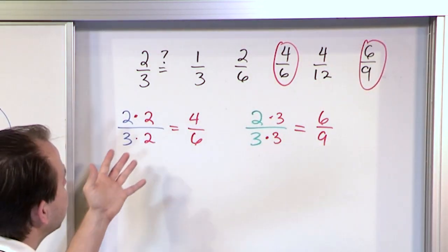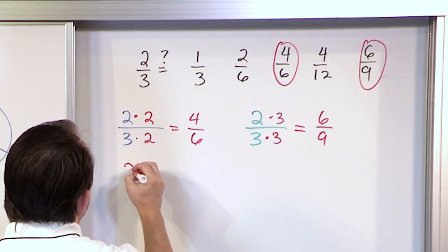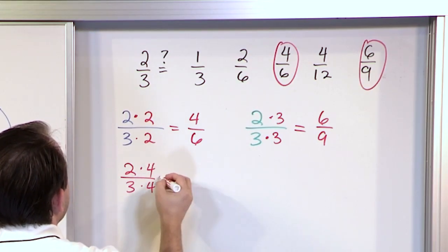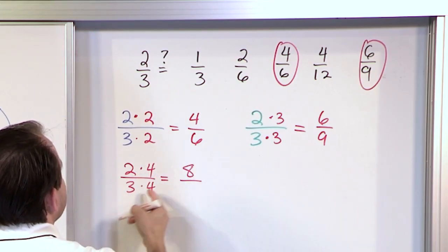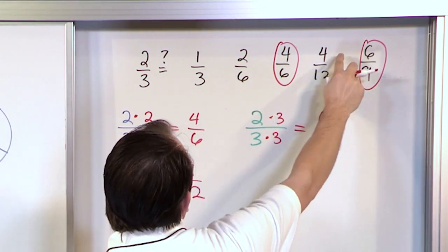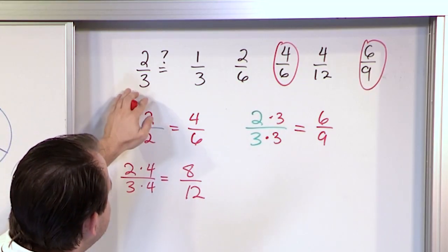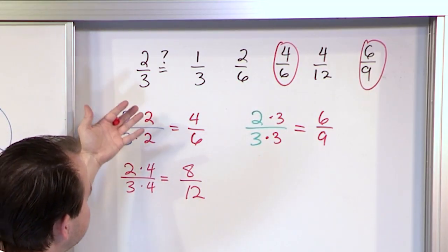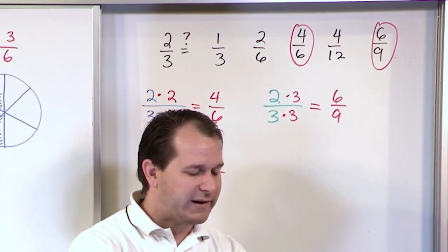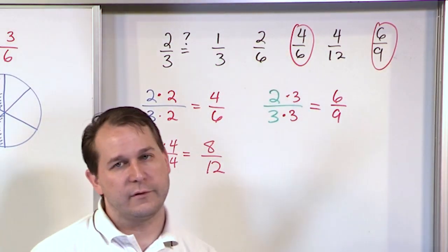Now I can keep multiplying — let's try by four. Two-thirds: multiply the top by four and the bottom by four, on the top I'll get eight and on the bottom I'll get twelve. So I look for eight-twelfths — I don't see it. I have four-twelfths, but that's different, that's not equivalent. If I keep multiplying by five, six, seven, I'm not going to have any matches. So we can see that four-sixths and six-ninths are both equivalent to each other and to two-thirds.